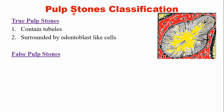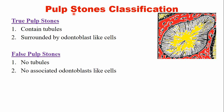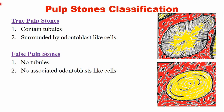What are false pulp stones? False pulp stones do not have any tubular structure and are not associated with odontoblast-like cells. This is a picture of a false pulp stone — it does not have any tubular structure, and the cells are not surrounded by any odontoblast-like cells.